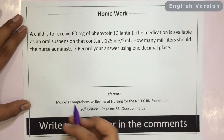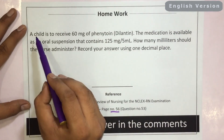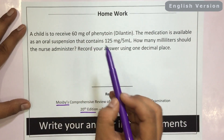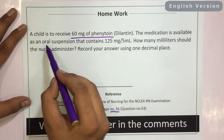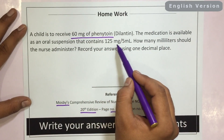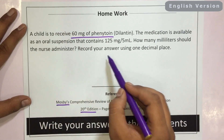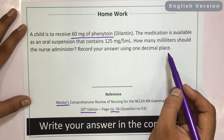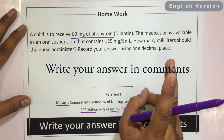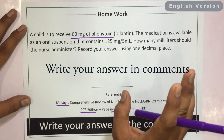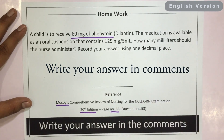Here's some homework for you. This question is from Mosby's 20th edition, page number 56. A child is to receive 60 mg of phenytoin. The medication is available as an oral suspension that contains 125 mg per 5 ml. How many milliliters should the nurse administer? Record your answer using one decimal place. Always remember the golden rules: follow the steps, use the formula, calculate it, and always keep the units in mind. Do solve this question and write your answer in the comment section.